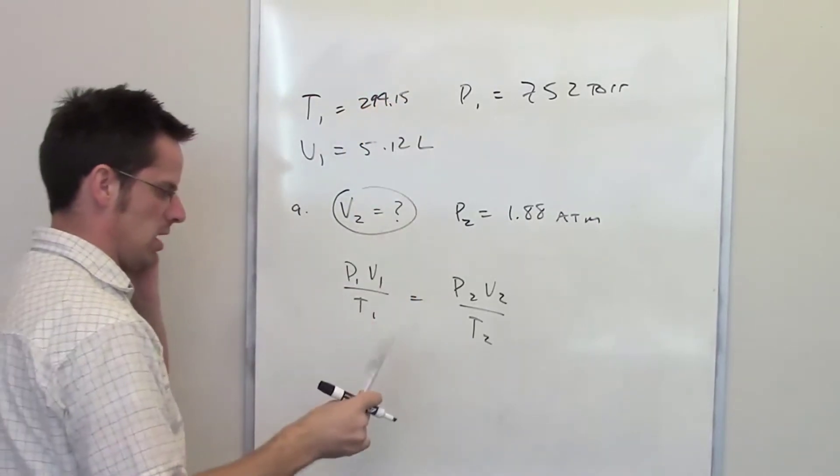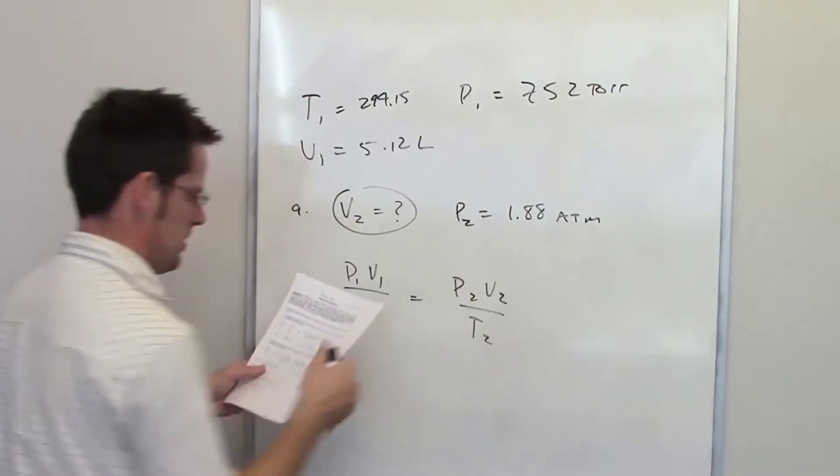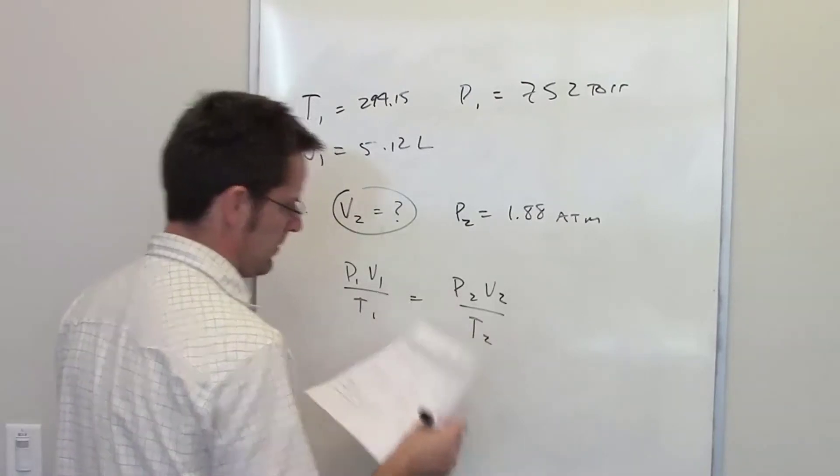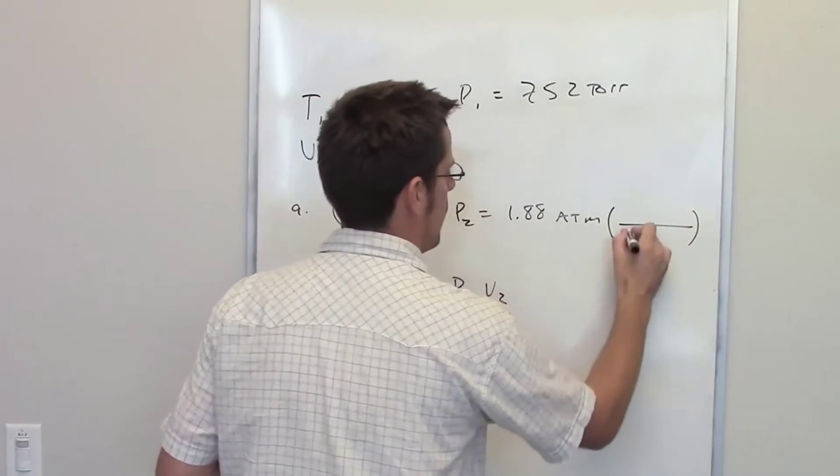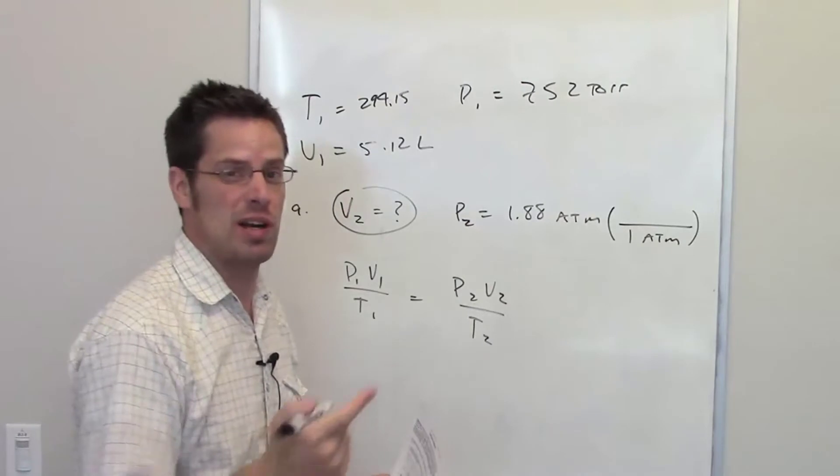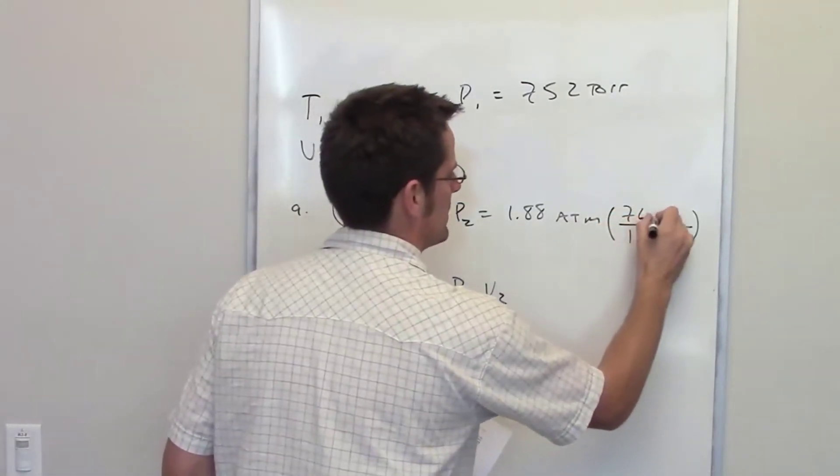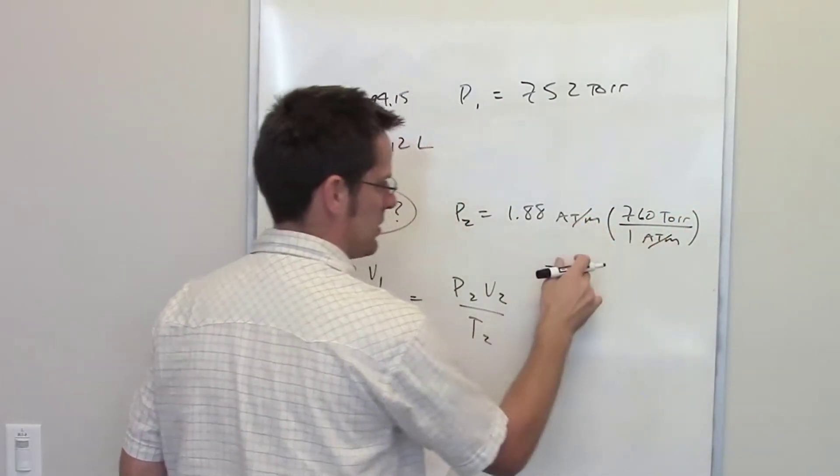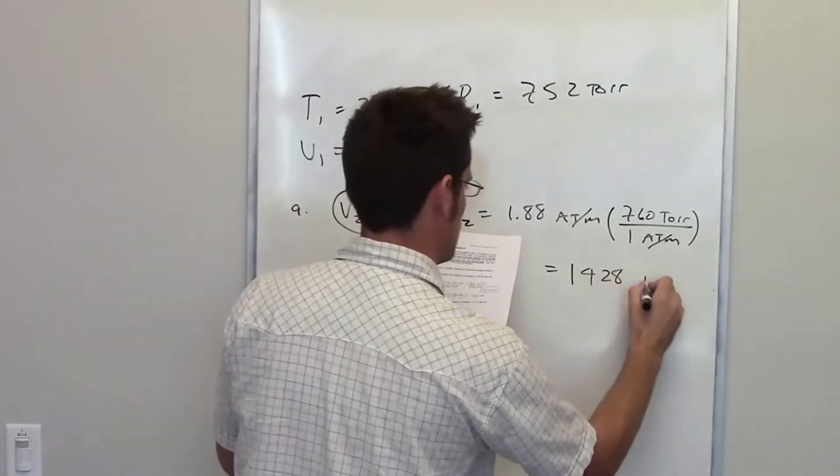We also want to make sure that our pressure units match. I've got torr here and I've got atmosphere here. For the fun of it, I'm going to keep everything in torr. I've asked you to memorize that one atmosphere equals 760 millimeters of mercury. A torr and a millimeter of mercury, same thing. So one atmosphere equals 760 torr. You throw that in your calculator, the atmospheres cancel each other out, and you'll discover that pressure 2 ends up equaling 1428 torr.